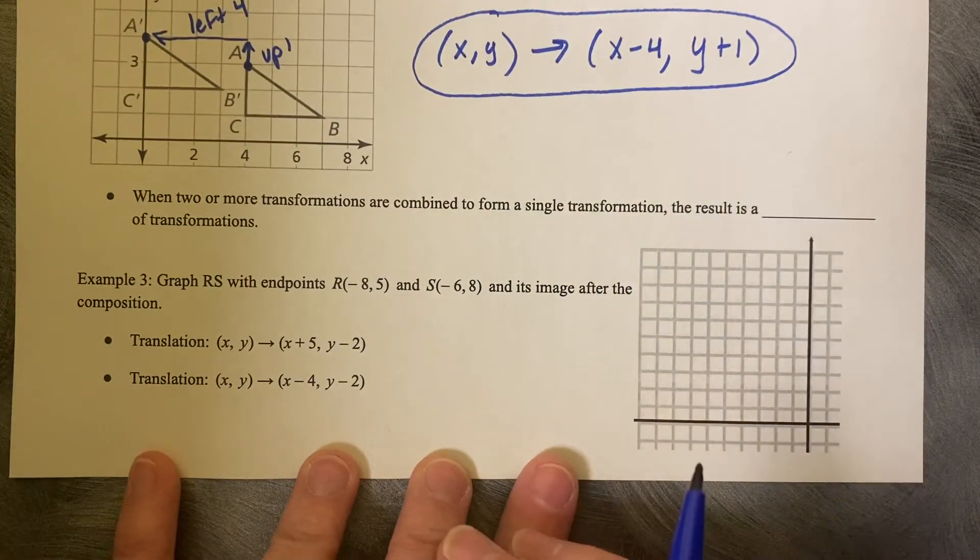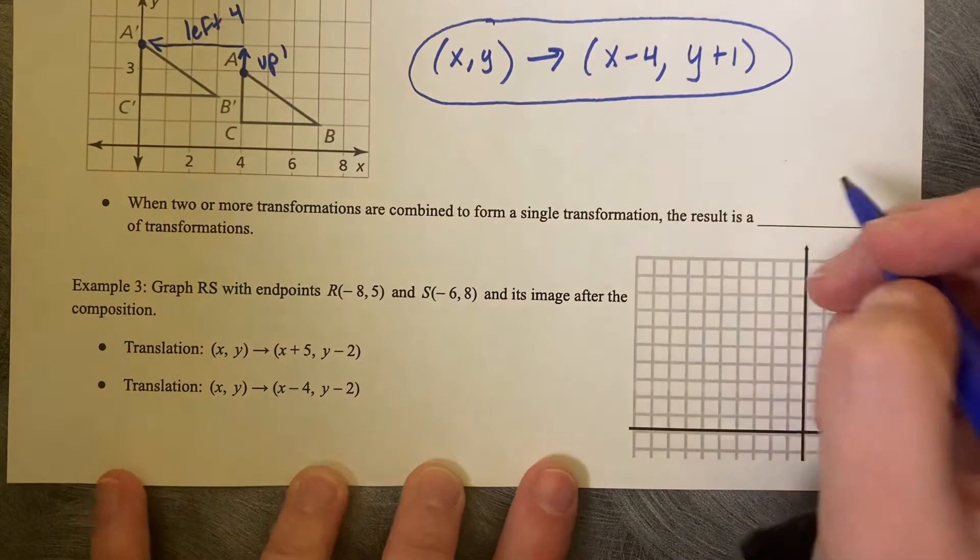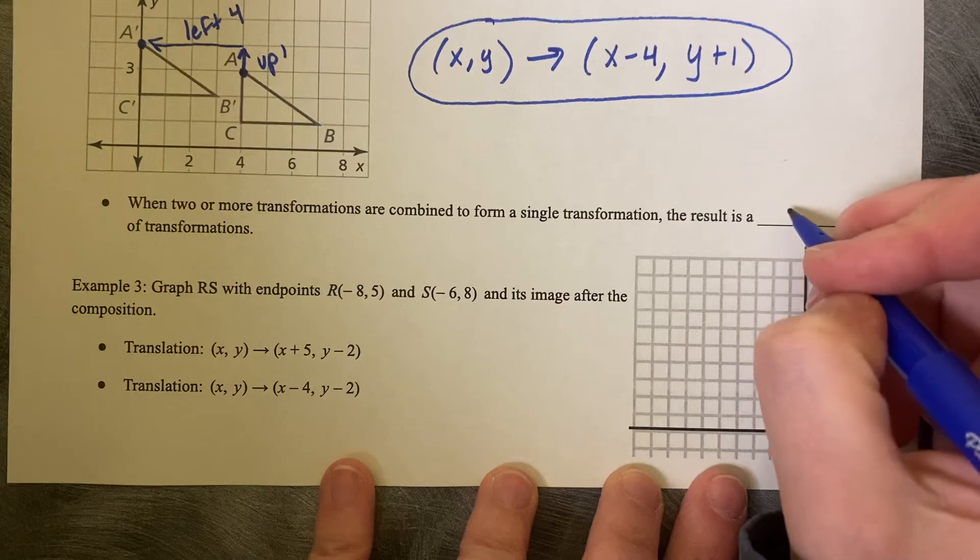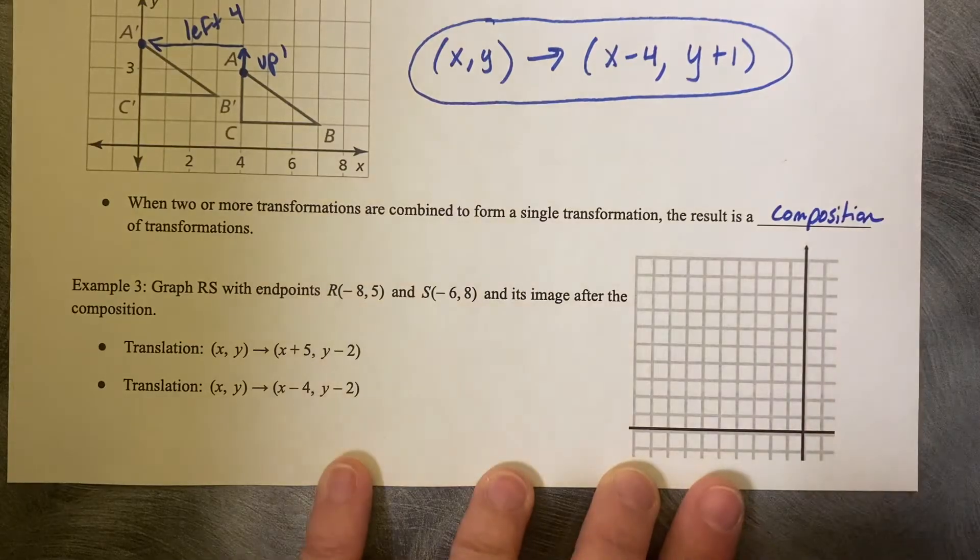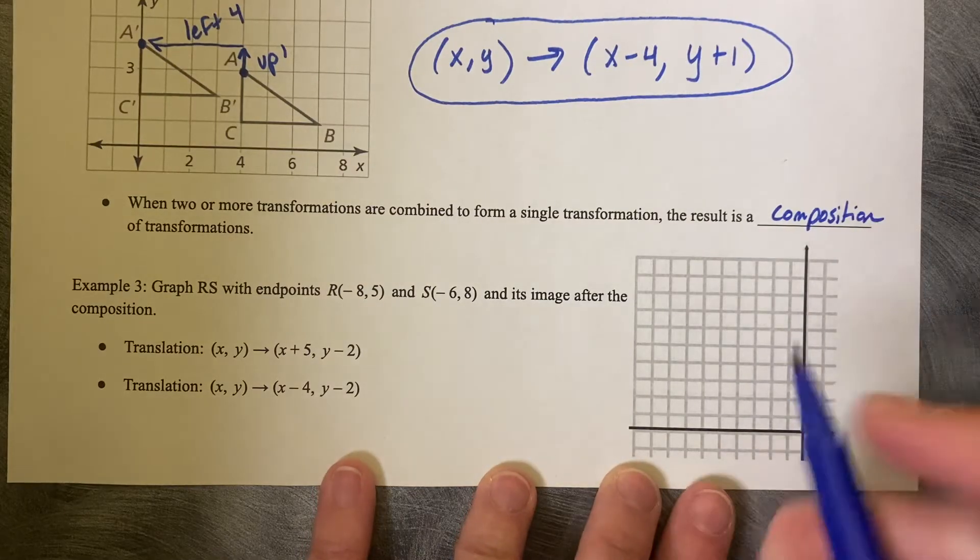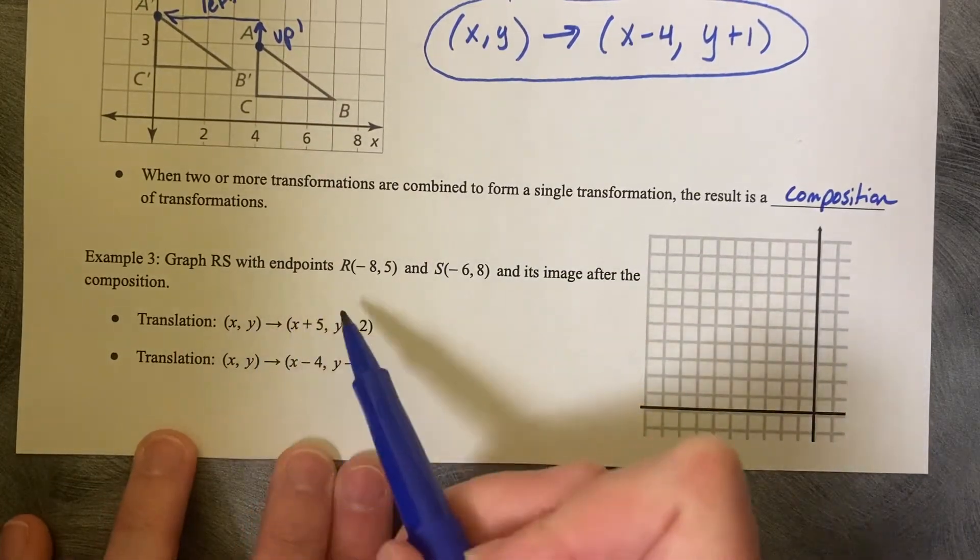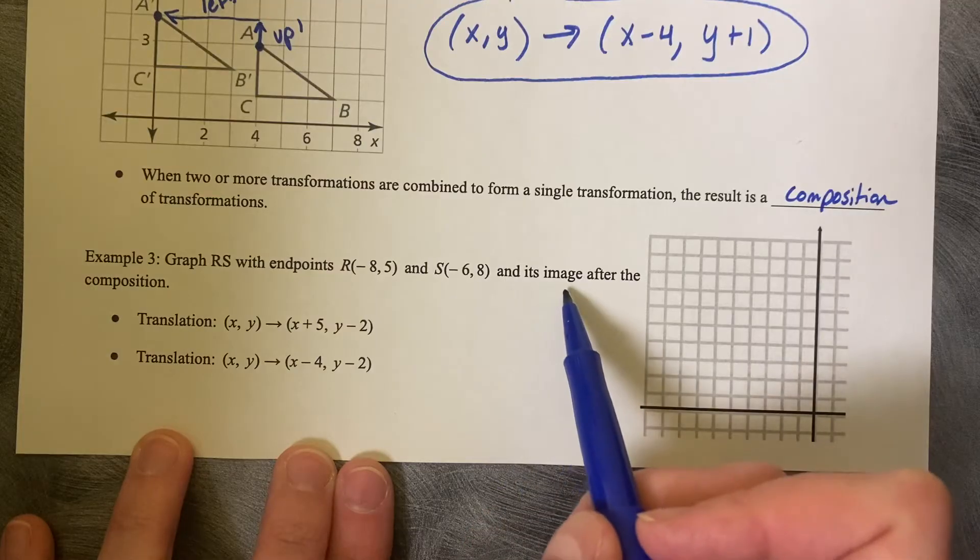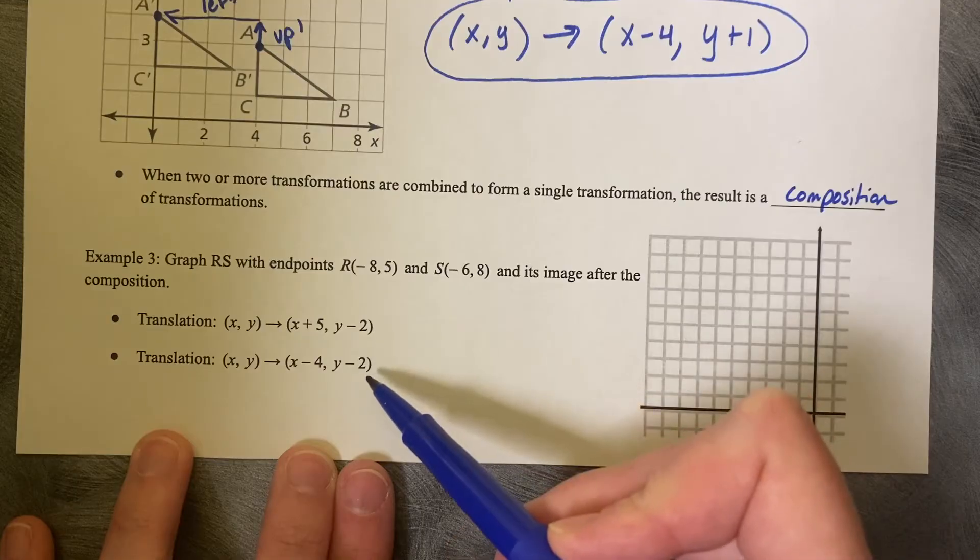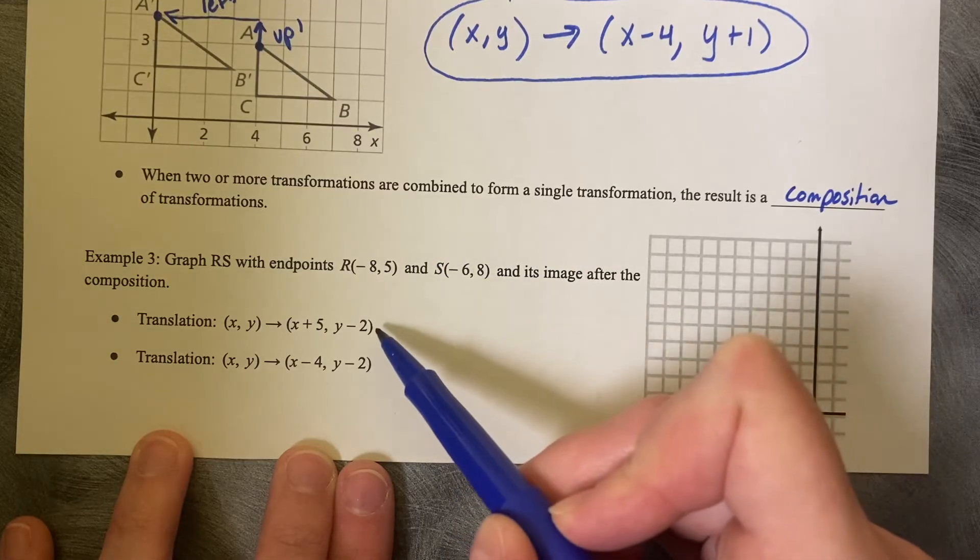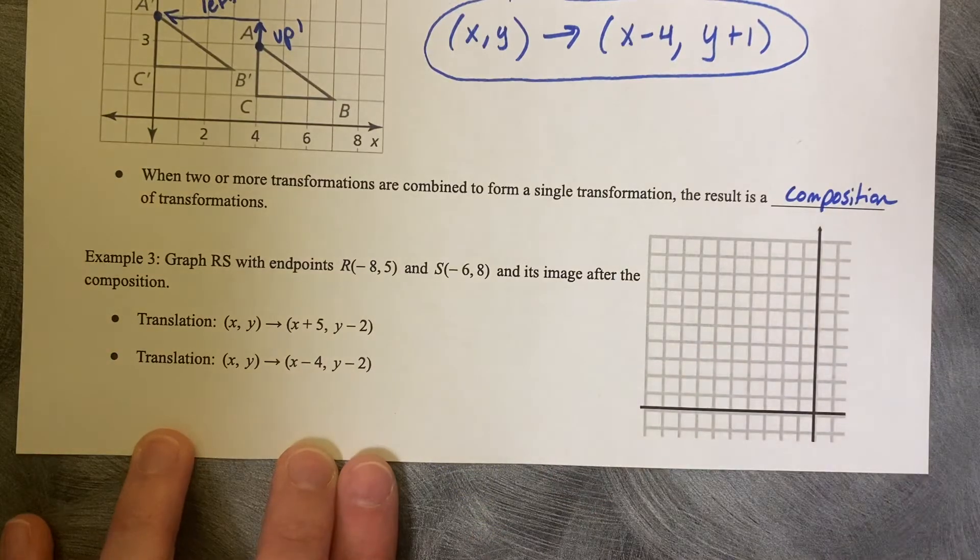When two or more transformations are combined to form a single transformation, the result is a composition of transformations. Composition combined, composition of transformations. So graph RS with endpoints R and S and its image after the composition. So we're going to do both of these steps, and you're going to start with your image, then you'll go to this prime image, and then finally you'll get to your double prime image. You can use two apostrophes.